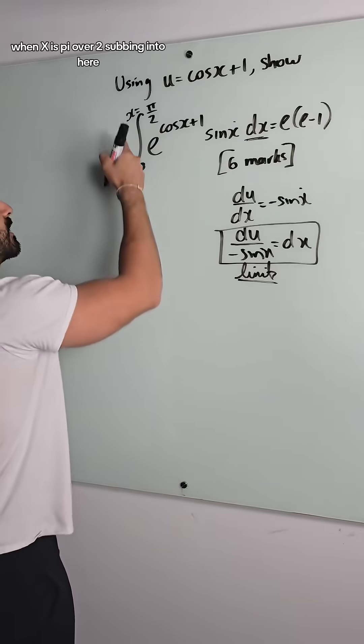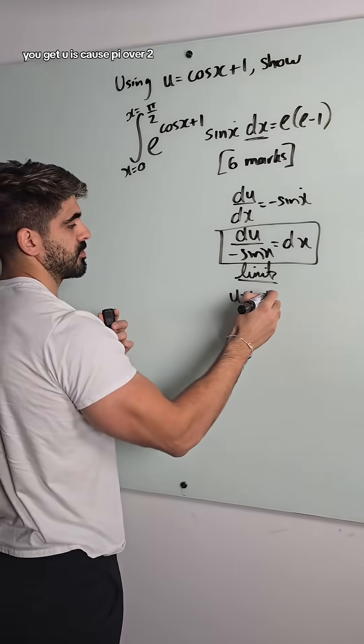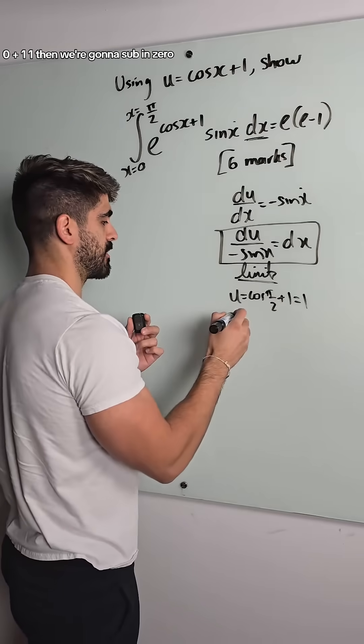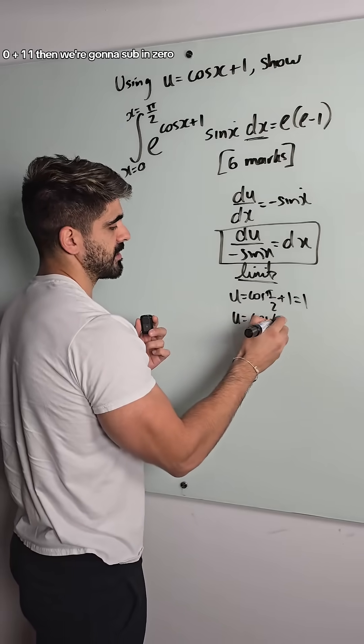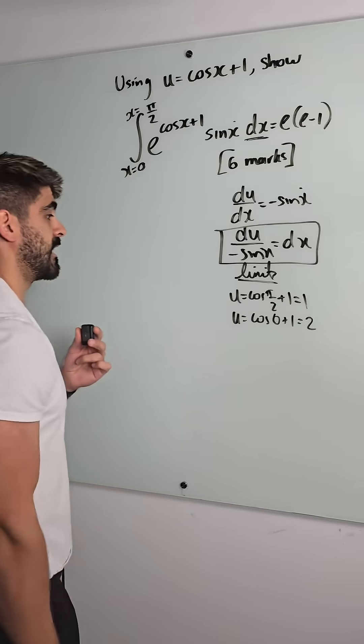Okay, so with the limits, when x is pi over 2, subbing into here, you get u is cos pi over 2. Remember, all calculus is done in radians. Cos of pi over 2 is 0, plus 1, 1. Then we're going to sub in 0, cos plus 1 is 2.